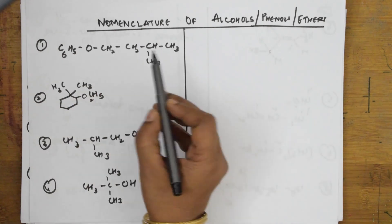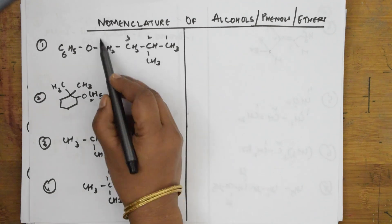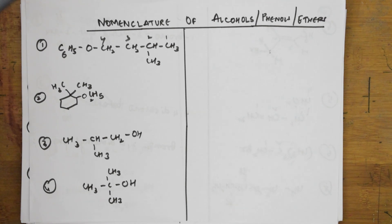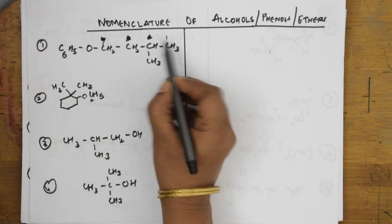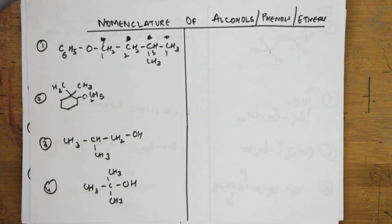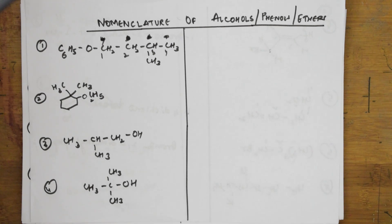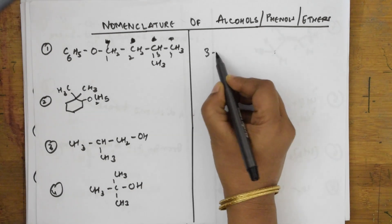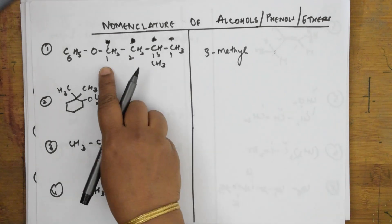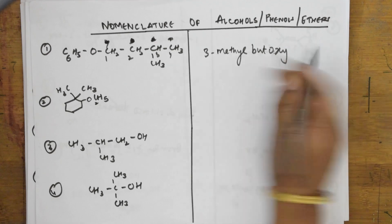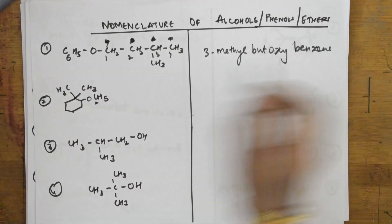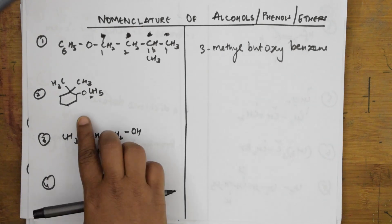Looking at this ether compound, first identify the parent chain: one, two, three — and this direction is correct because the ether oxygen side is taken as a substituent and given first preference in numbering. That carbon gets the first position, making this a four-carbon chain — butane.